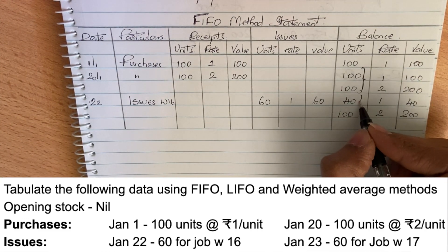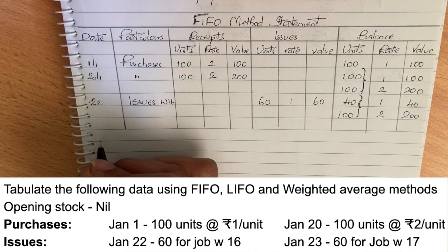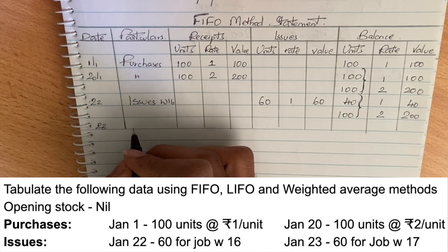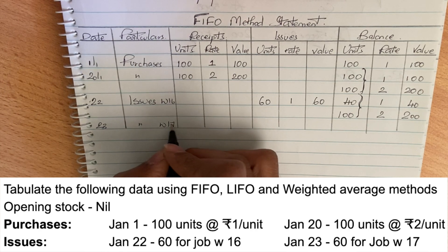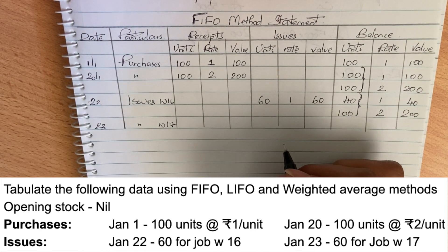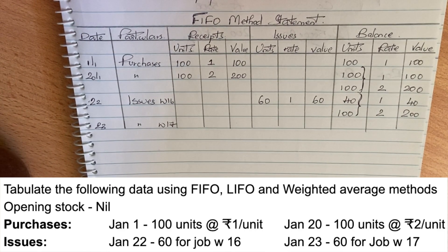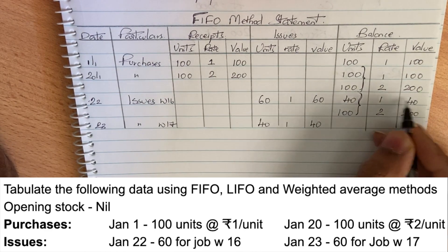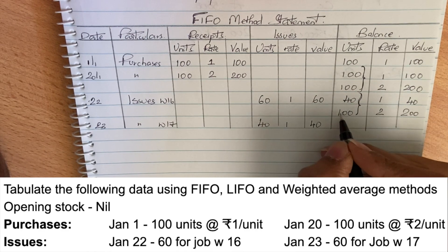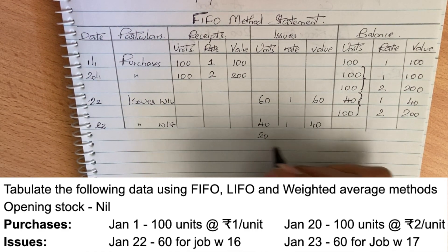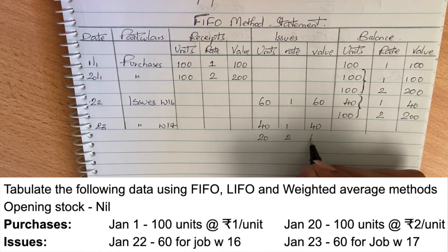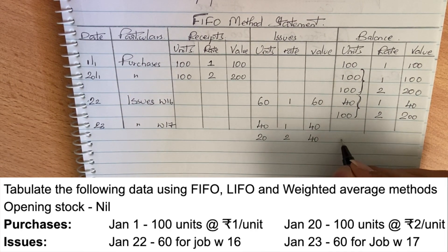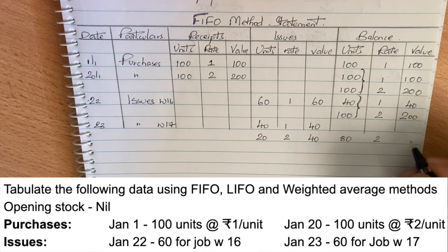On January 23rd, another issue is made. The remaining 40 units from the first lot at rate 1 = 40, and that lot is now completely depleted. We still need 20 more units, taken from the second lot at rate 2, so 20 into 2 = 40. Total issue = 40 + 40 = 80. Balance: the second lot now has 80 units remaining at rate 2, value 160.